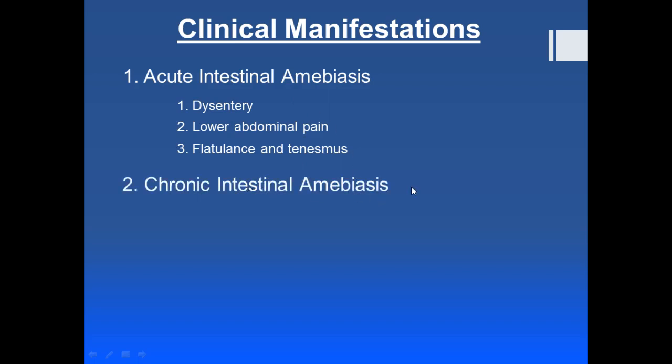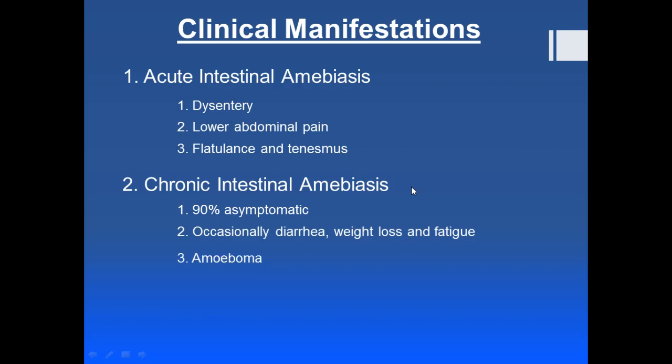In chronic intestinal amoebiasis, mainly 90% of cases are asymptomatic. Occasionally, diarrhea, fever, weight loss, or fatigue may occur. Rarely, amoeboma — also known as amoebic granuloma — is formed. Amoeboma is a complication in which annular colonic granulations are formed, and this mimics colon carcinoma. These are the complications of chronic intestinal amoebiasis.